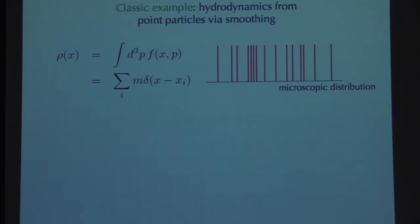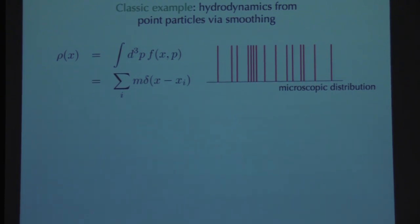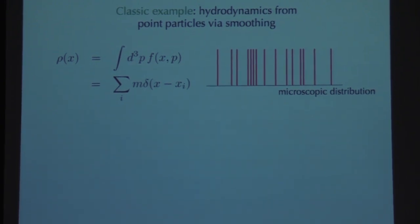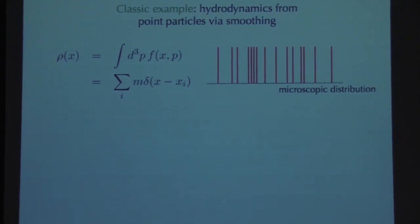The classic example to have in mind is not billiard balls but hydrodynamics — the transition from point particle descriptions of fluids to continuum descriptions. Imagine a distribution function where the density is just a delta function at the position of every particle. The real microscopic description is given by something like the Boltzmann equation — you have some distribution function that tells you the probability density of different particles having a number density and kinetic energy in different regions of space.